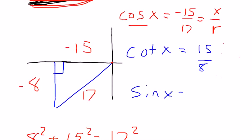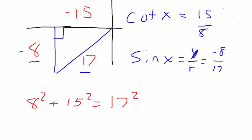Sine, again, not too bad to find after I have the diagram. Sine is y over r. Y is negative 8. R is 17. Cosecant is the reciprocal.